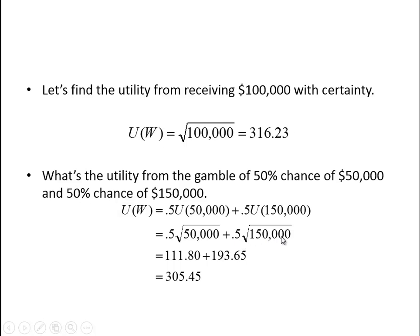The square root of 150,000 times 0.5 is 193.65. If you add them together, you get 305.45.